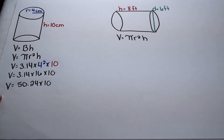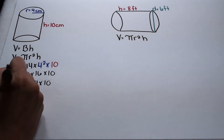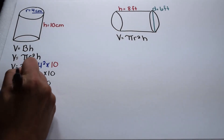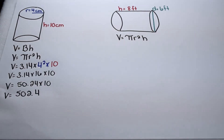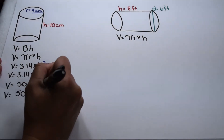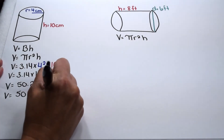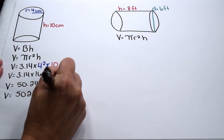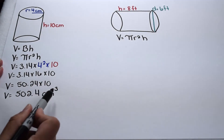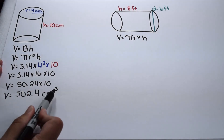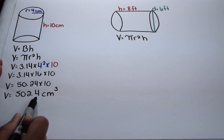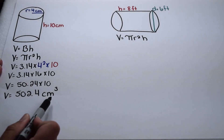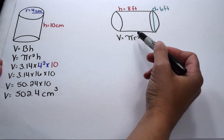To find the total volume, we need to multiply that by 10. 50 and 24 hundredths multiplied by 10 comes out to be 502 and 4 tenths. Since our cylinder is labeled in centimeters, our volume also needs to be labeled in centimeters to the third power. So we have 502 and 4 tenths cubic centimeters.